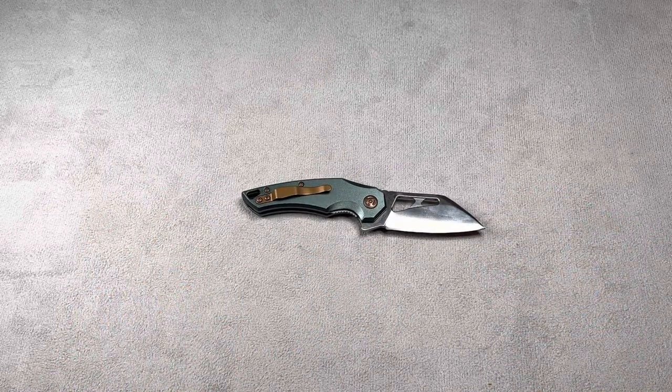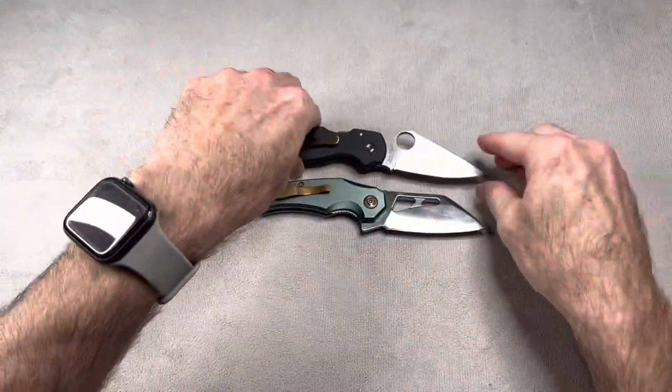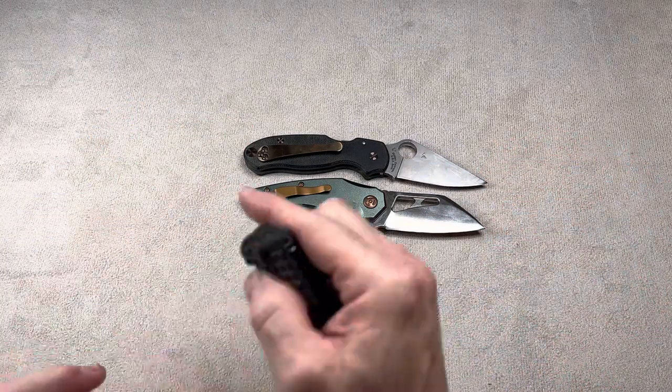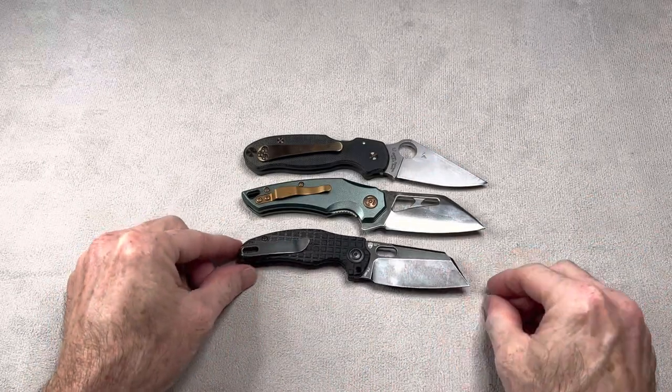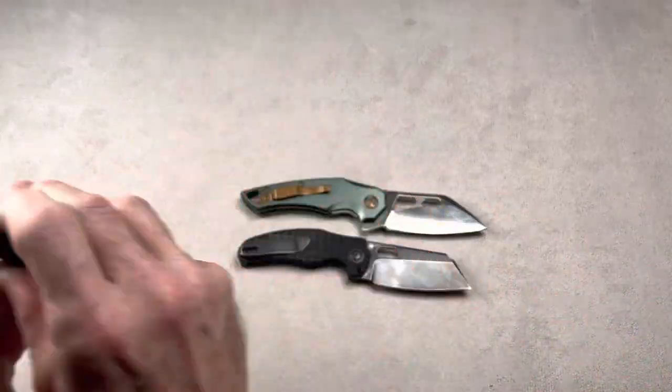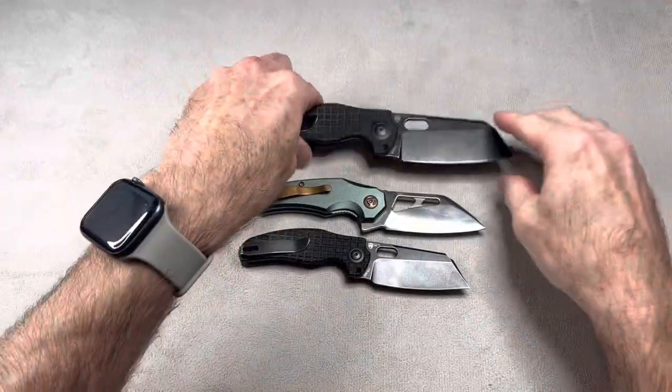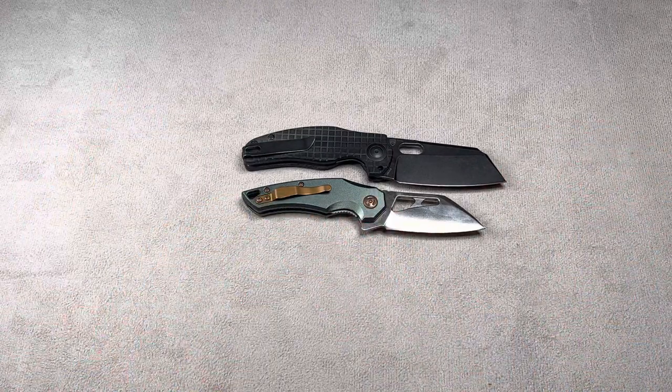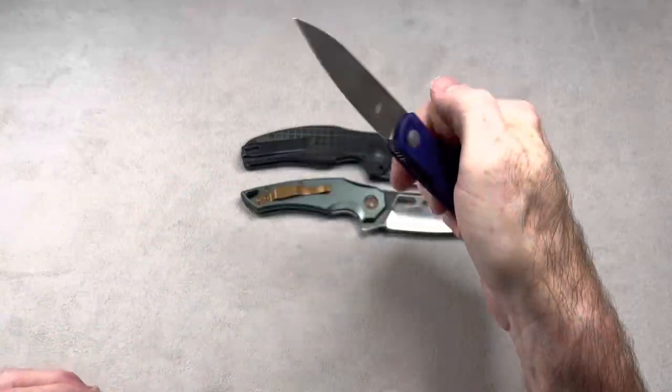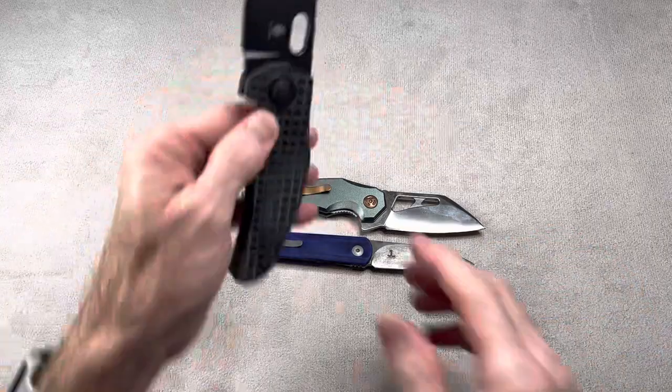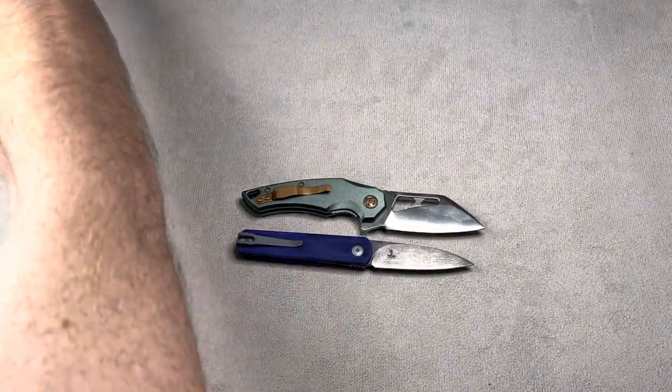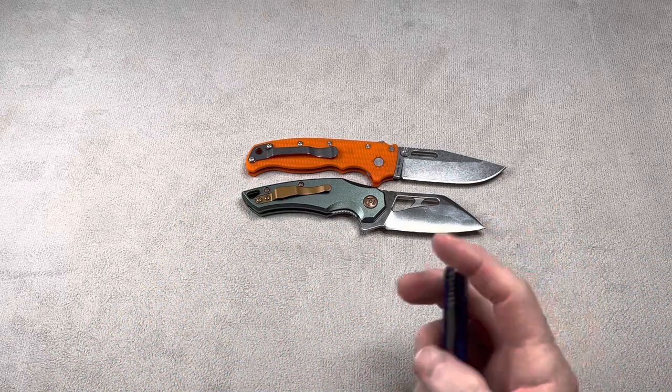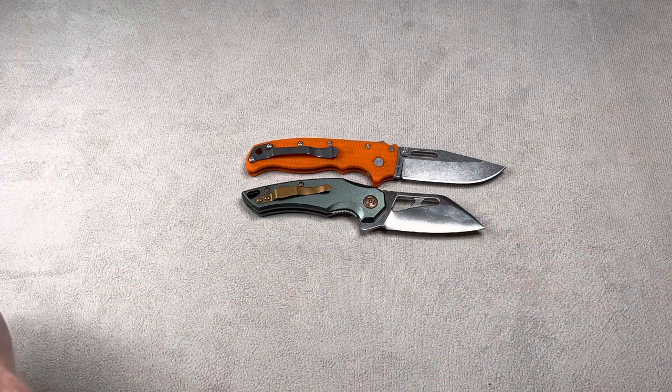Let's do some size comparisons here. Here is a Spyderco Para 3, so similar in size to a Para 3, a little bit smaller. Here is a Kaiser Mini Sheepdog. It's a little bit bigger than the Mini Sheepdog. Let's go ahead and do the regular Sheepdog. It's kind of right in the middle of these two honestly, right dead in the middle size wise. Here's a Kaiser Feist. Here's a Demko AD 20.5, quite a bit smaller than the AD 20.5.